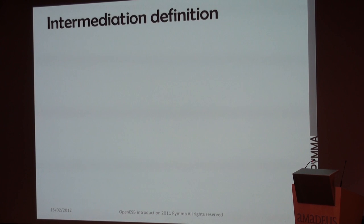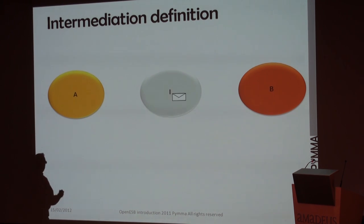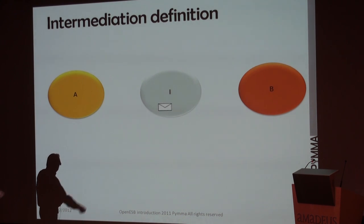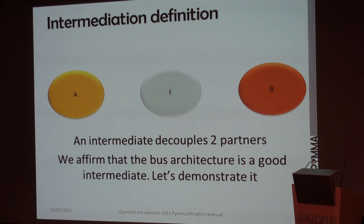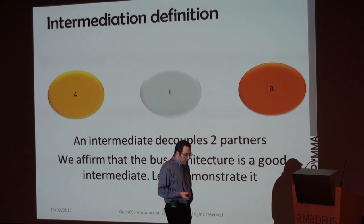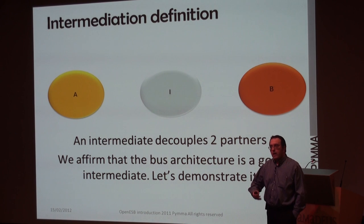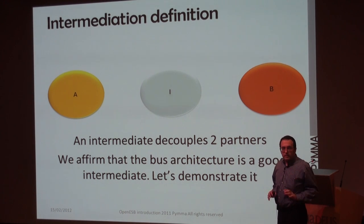Intermediation. An intermediary: I have two entities, A and B. A sends a message to B. An intermediary is an entity I put in the middle that receives the message from A and sends it to B. What happens inside the intermediary doesn't matter. OpenUSB uses a bus, and I would like to show you that the bus is a very good intermediary — it helps you decorrelate partners in the business process.